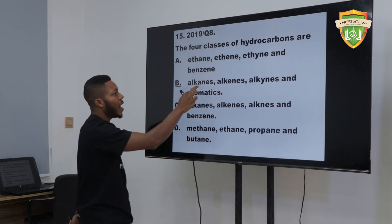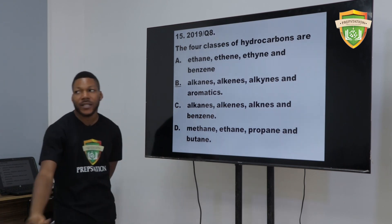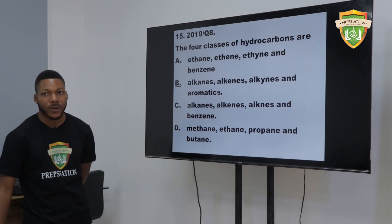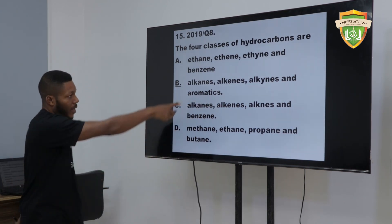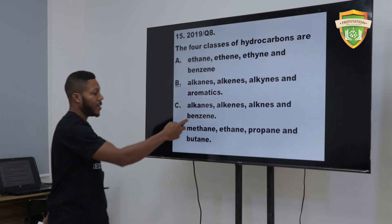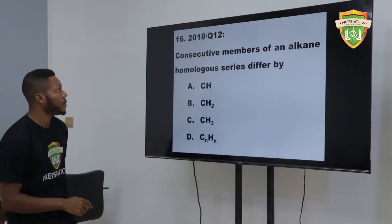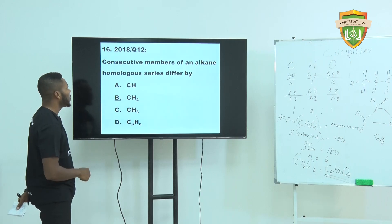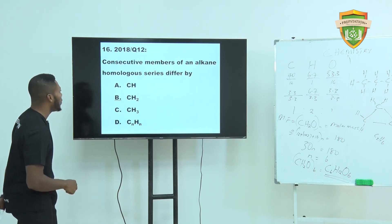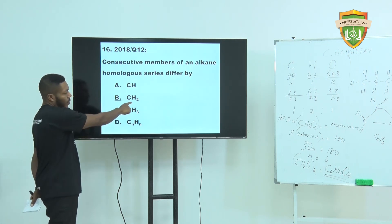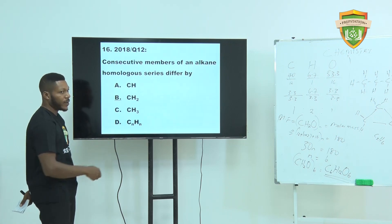Don't forget that alkanes, alkenes, and alkynes fall under aliphatic hydrocarbon, whereas aromatic is represented by the benzene ring. So the answer there is B. 2018, Question 12: Consecutive members of an alkane homologous series differ by CH2. Very simple.